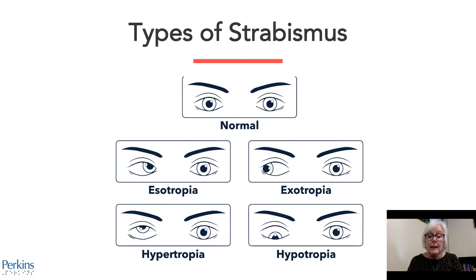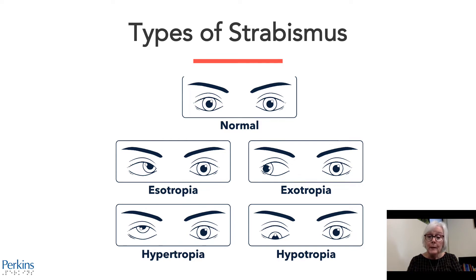Children with CVI can have a wide variety of types of strabismus. They can have esotropia, where eyes turn inward; exotropia, where eyes turn outward; hypertropia, where eyes tilt upwards; or hypotropia, where the eyes tilt downwards. And any combination can be true.